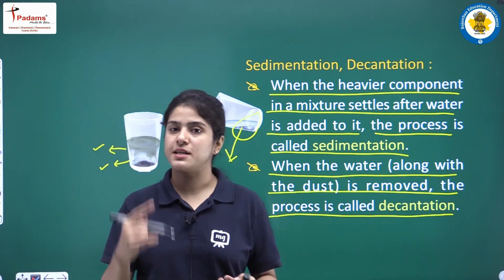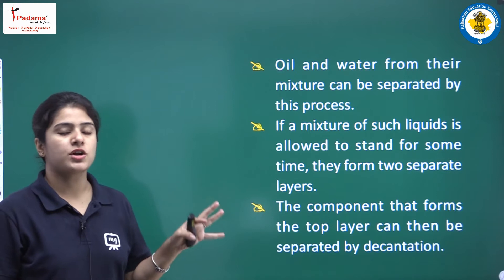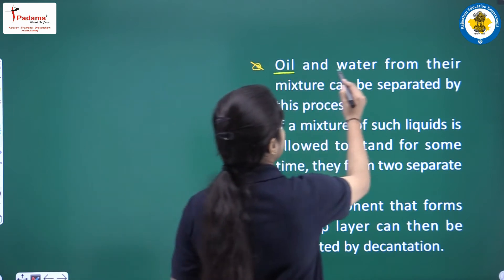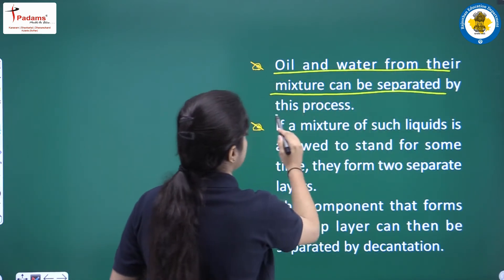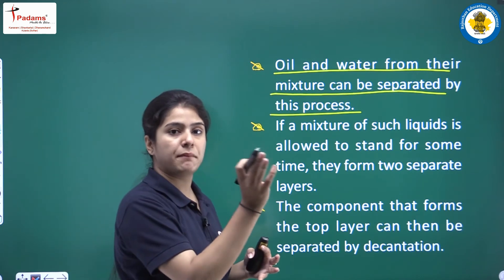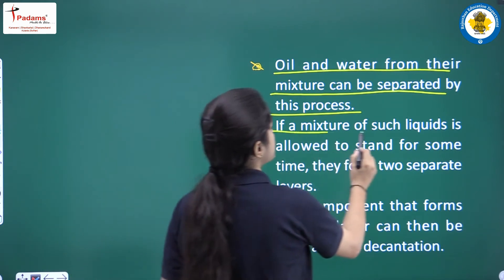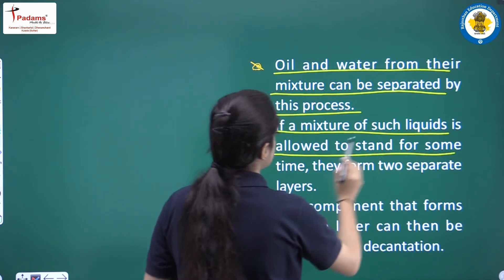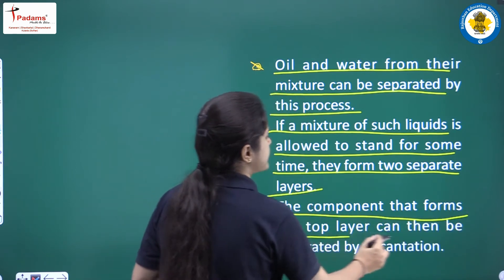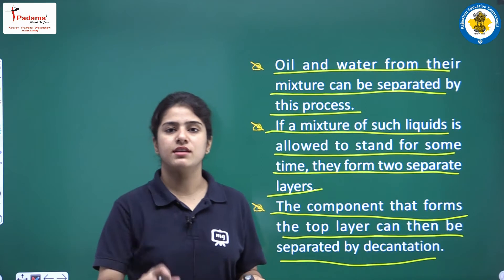In the process of sedimentation and decantation, you can clearly separate different things. For example, oil and water can be separated by sedimentation and decantation. If a mixture of such liquids is allowed to stand for a few minutes, you will see that oil forms the upper layer and water is at the lower layer. If the mixture is allowed to stand for some time, they form two separate layers, and the component forming the topmost layer can be separated by the process of decantation.